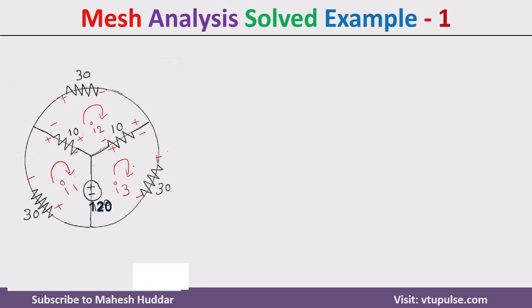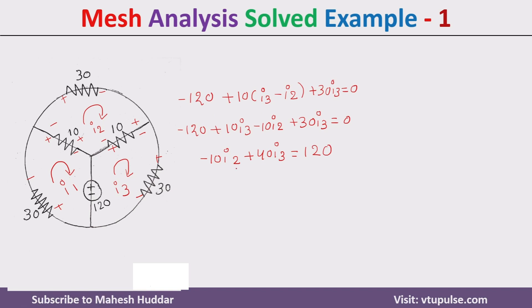And for the third loop we need to find the current: −120 + 10·(I3 − I2) + 30·I3 = 0. By solving this equation we get −10·I2 + 40·I3 = 120. Make this equation number 3.